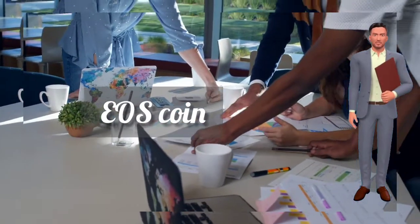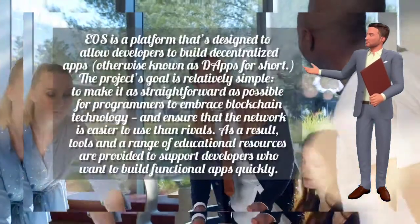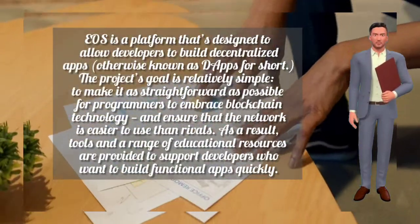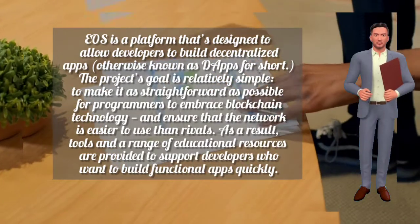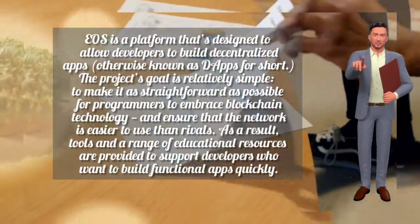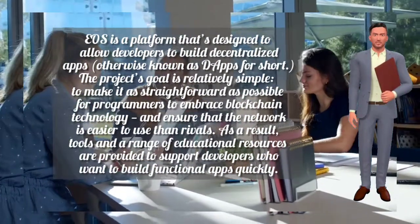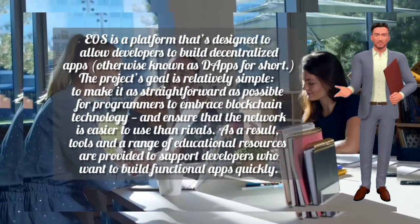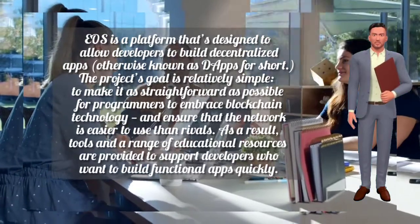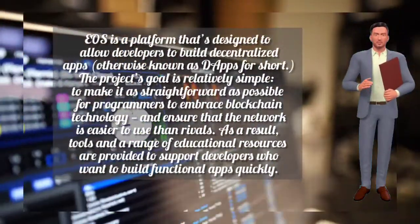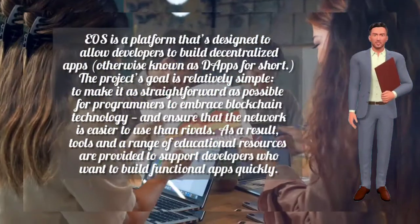EOS is a platform designed to allow developers to build decentralized apps, otherwise known as dApps. The project's goal is relatively simple: to make it as straightforward as possible for programmers to embrace blockchain technology, ensure the network is easier to use than rivals, and provide tools and educational resources to support developers who want to build functional apps quickly.